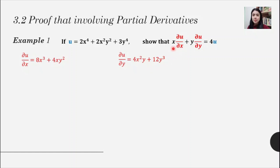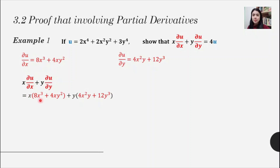Once we have the first order partial derivatives, we take the left-hand side of the equation and do the substitution. The left-hand side is x(del u/del x) + y(del u/del y). We take the results of the first order partial derivatives and substitute them in. After substituting, we expand the expression.